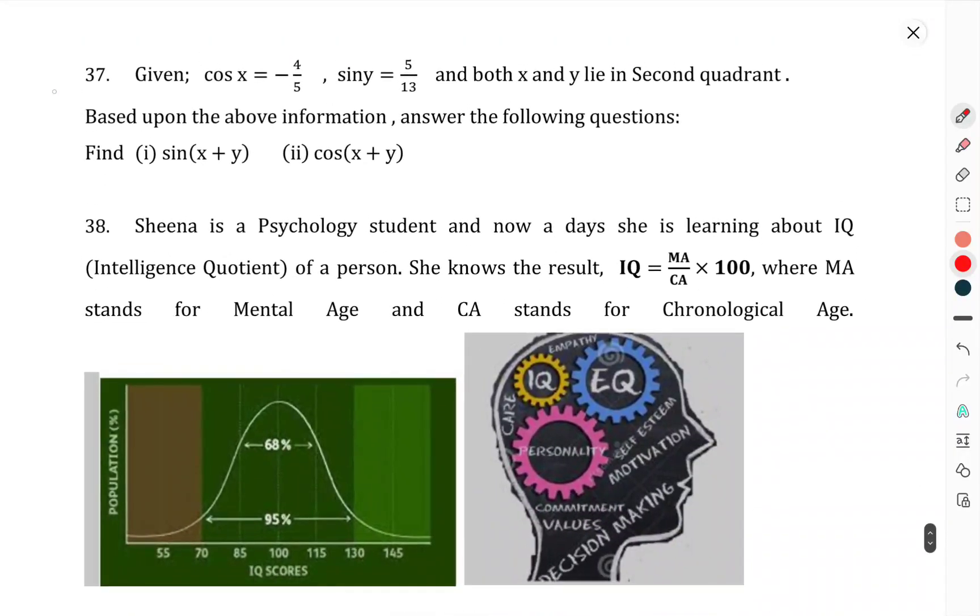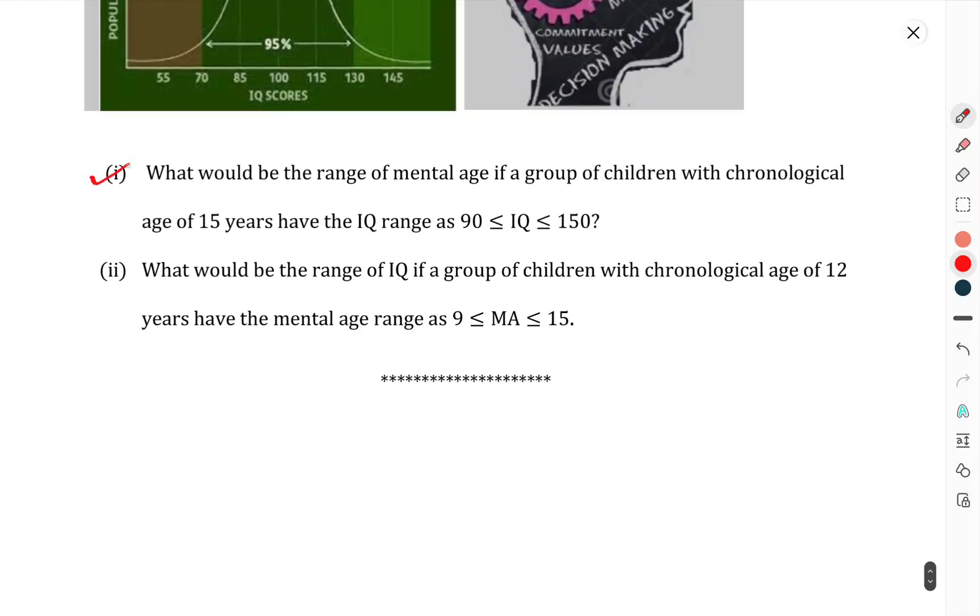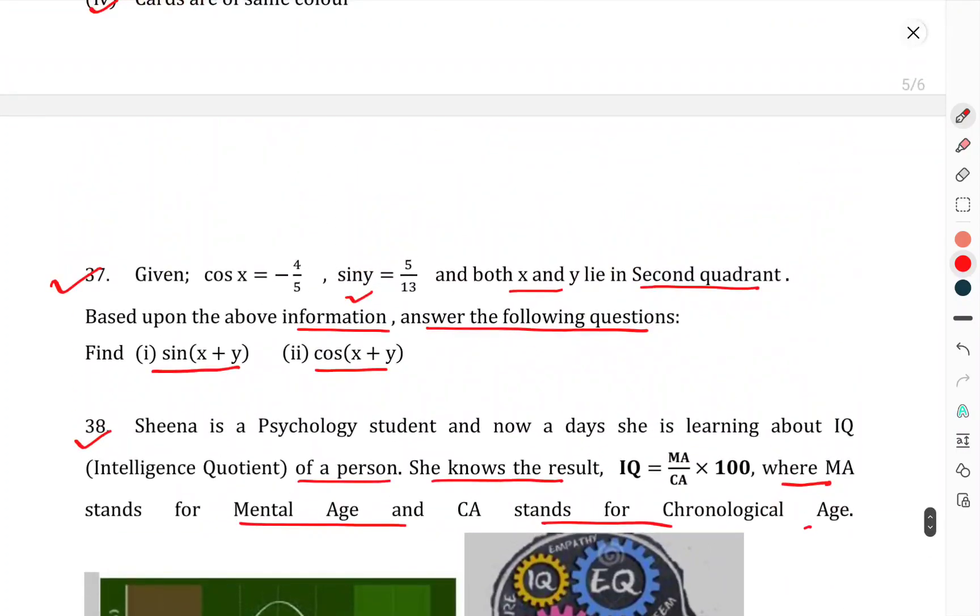Question number 37: Given cos x equals -4/5 and sin y equals 5/13, and both x and y lie in the second quadrant. Based on the appropriate information, answer the following questions: find sin(x + y) and cos(x + y). Question number 38: Sheena is a psychology student, and nowadays she is learning about IQ (Intelligence Quotient) of a person. She knows the result: IQ equals (MA/CA) × 100, where MA stands for Mental Age and CA stands for Chronological Age. What would be the range of the mental age in a group of children with chronological age 15 years who have IQ range more than 90 but less than 150? What would be the range of IQ if a group of children with chronological age 12 years has mental age greater than 9 but less than 15? This was the question paper of mathematics half yearly for class 11th.